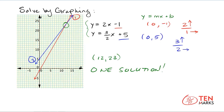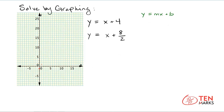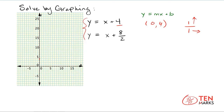Let's solve one last problem together. Here's the third system of equations: y equals x plus four on top, and y equals x plus eight over two on the bottom. For the first equation, y equals mx plus b, so the y-intercept has the coordinates zero, four. The slope has a coefficient of one, written as one over one, which means you go up one and to the right one from the point zero, four. I'm going to connect them with a line.